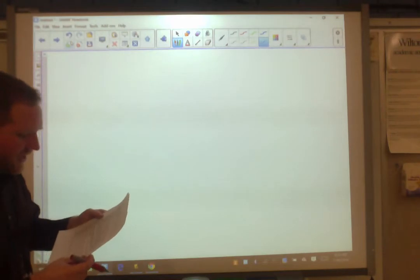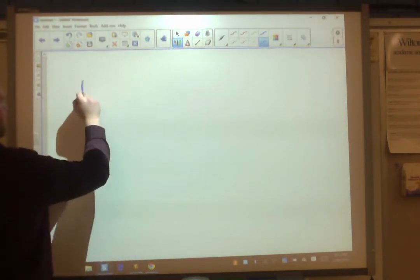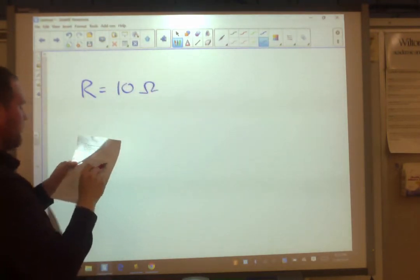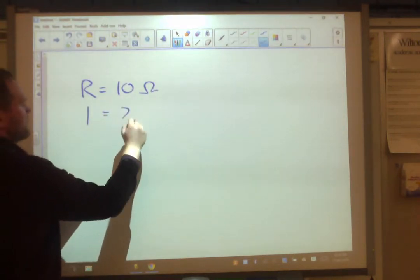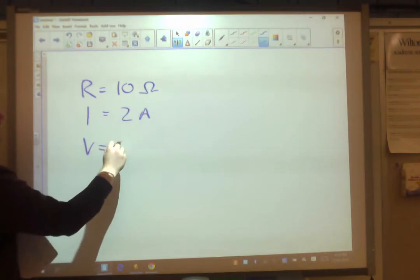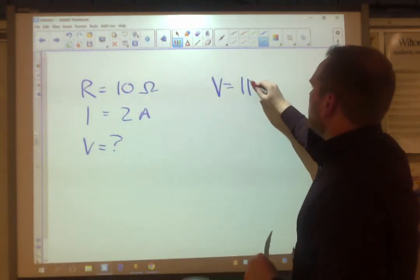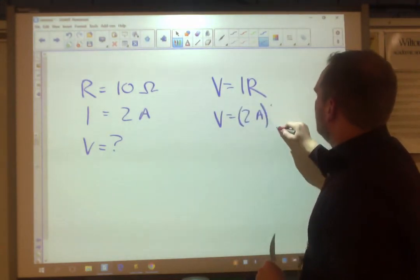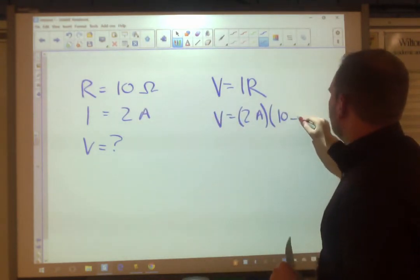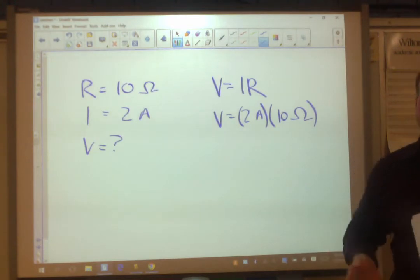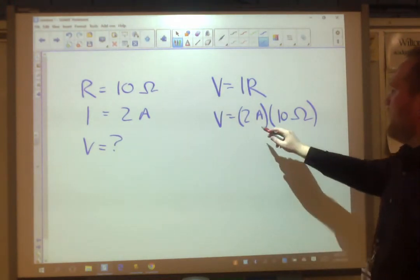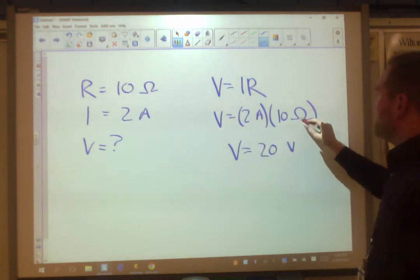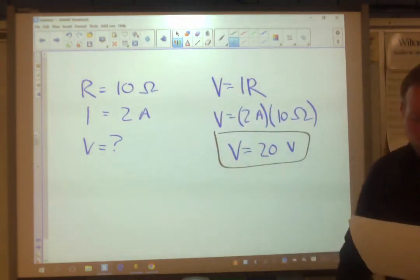13, what is the voltage of a circuit that has 10 ohms of resistance and has a 2 amp current flowing through it? Resistance equals 10 ohms, current I equals 2 amps, voltage equals question mark. Our formula, V equals IR, V equals 2 amps times 10 ohms. In this case, the units don't cancel or form a set unit, but 2 times 10 is going to give me 20, and the unit for that is volts. 20 volts of current.